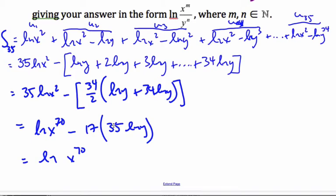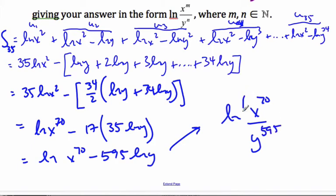This is ln x to the 70 minus 595 ln y, which will make it ln x to the power of 70 divided by y to the 595. This here is equal to S35.